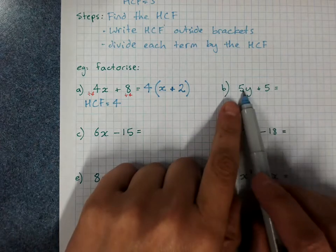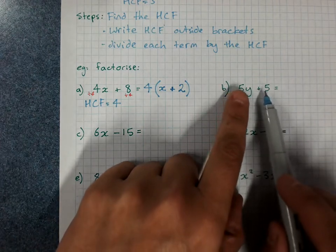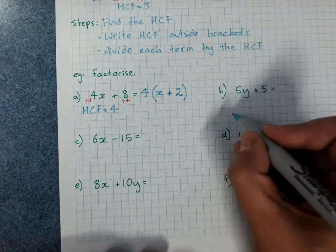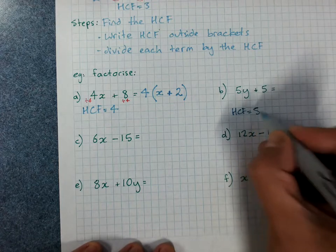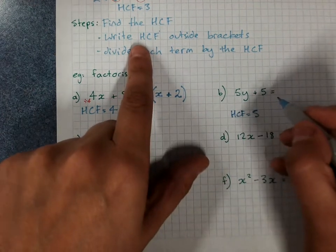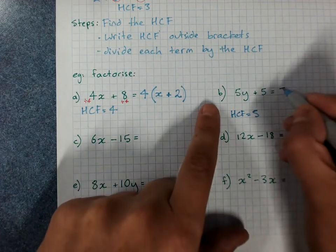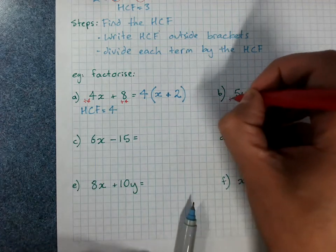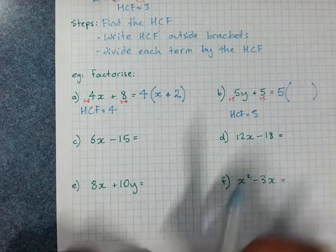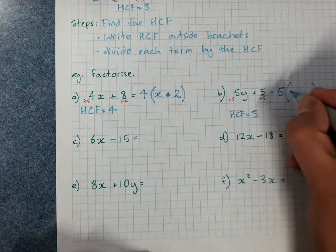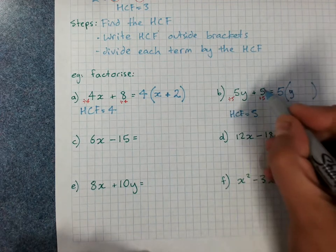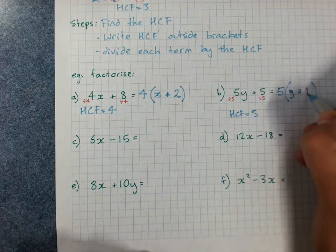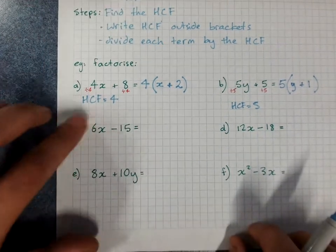Let's do this one. 5y plus 5. Look at the numbers. 5. Well, 5 goes into both of them. Y doesn't go into both of them. HCF is 5. Write the highest common factor outside the brackets. 5 outside of brackets. Divide each term by the HCF. 5y divided by 5 is y. 5 divided by 5 is 1. And it was positive. I write plus 1. You've factorised.